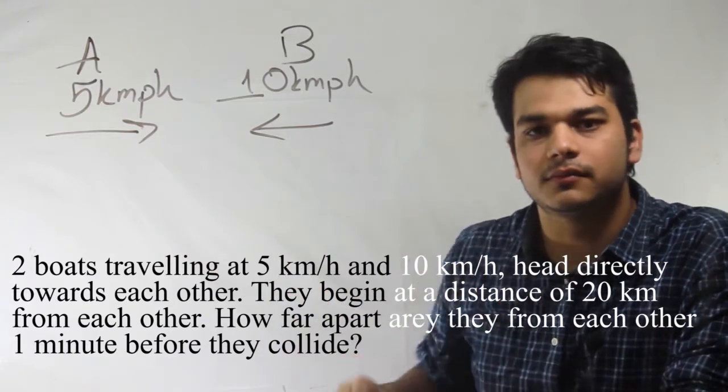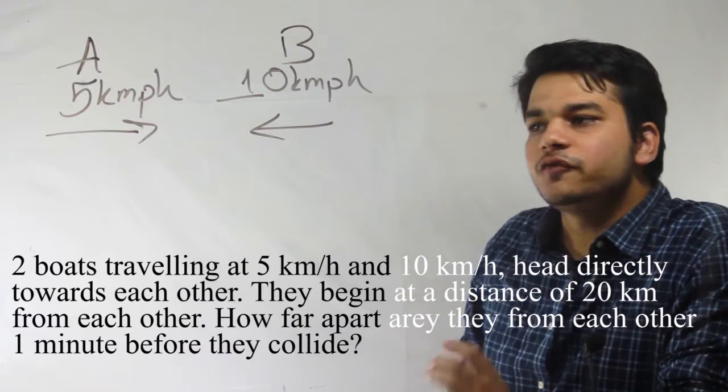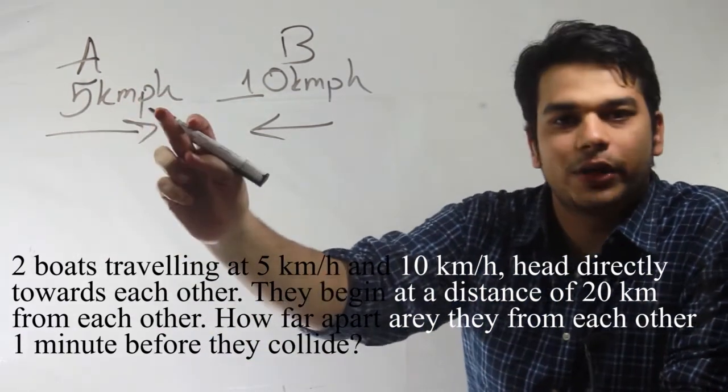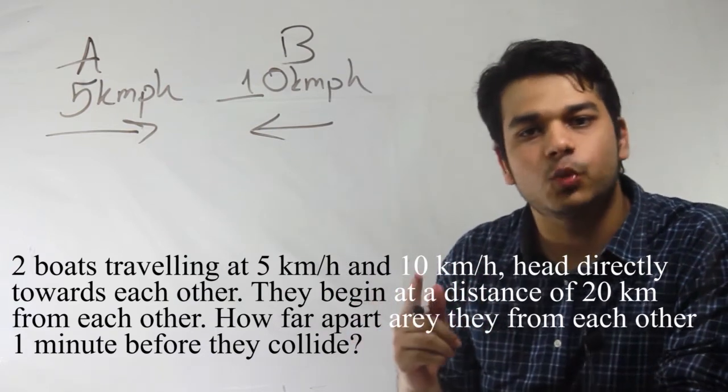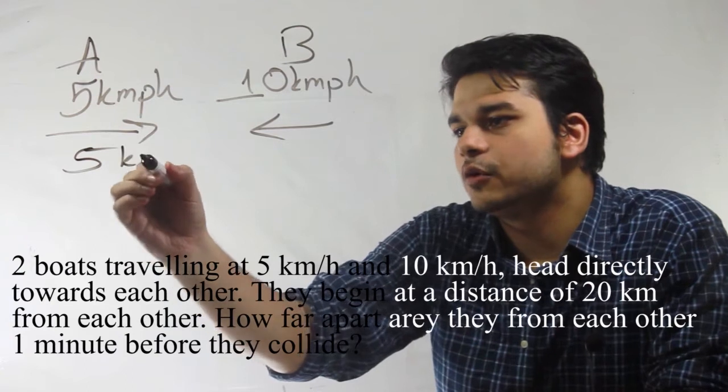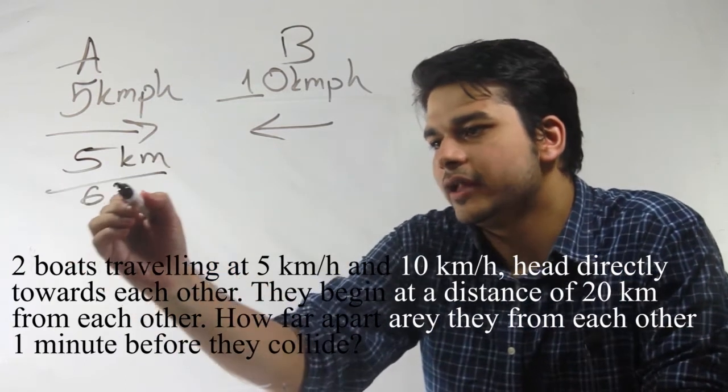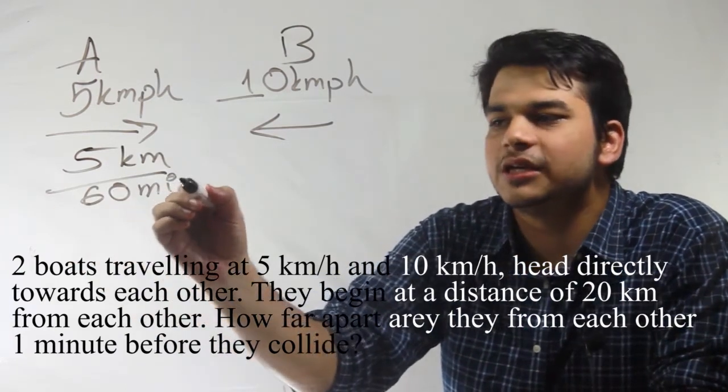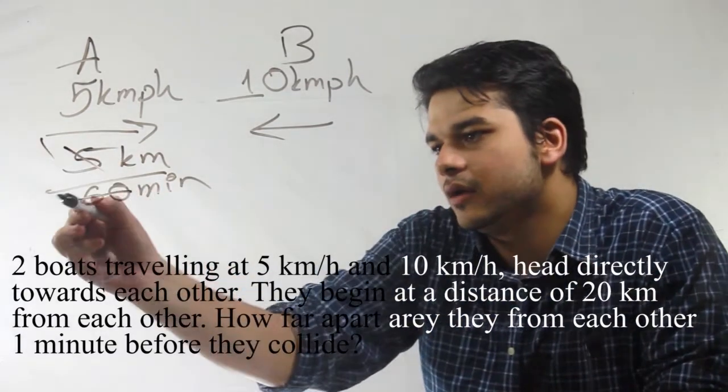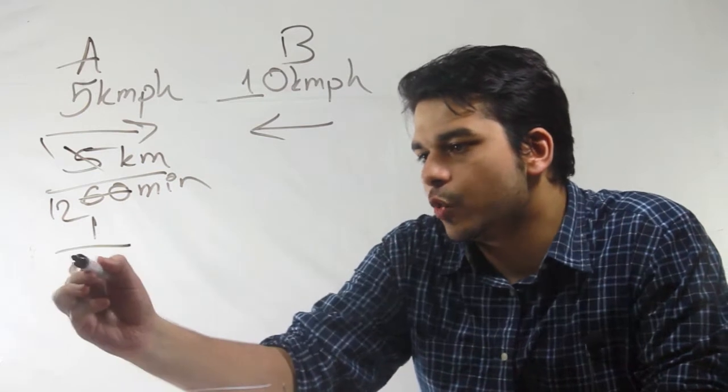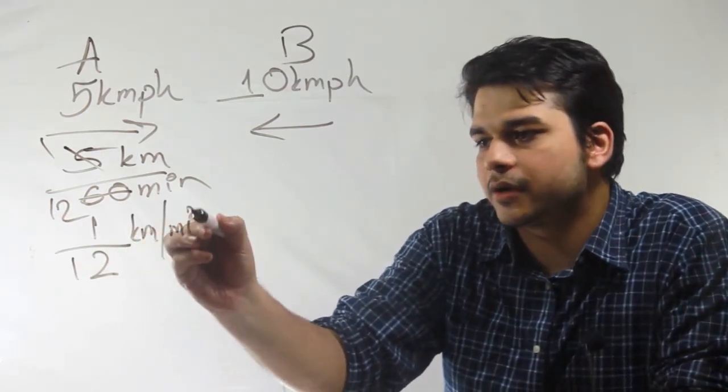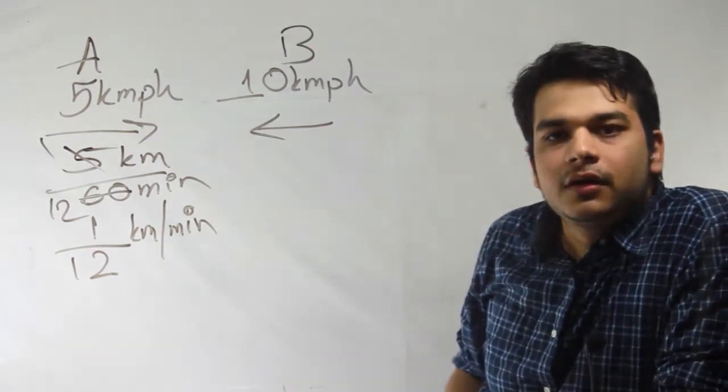So for that, A travels 5 km in 1 hour, but how much does it actually travel in just one minute? To find out that, 5 km in 1 hour or 60 minutes, or 5 over 12, so one-twelfth of a kilometer per minute.